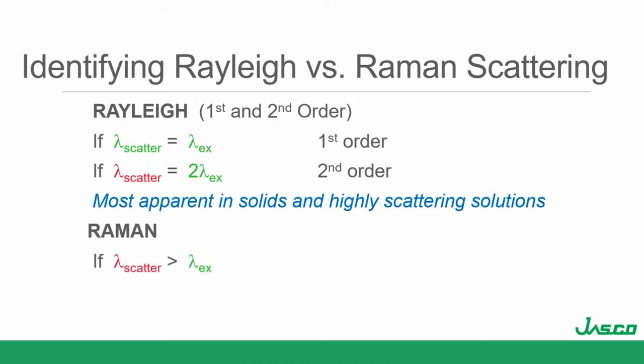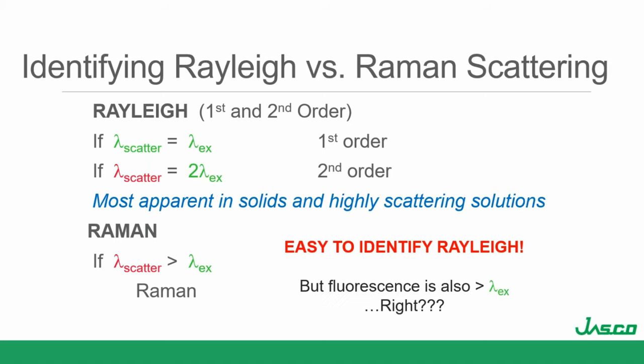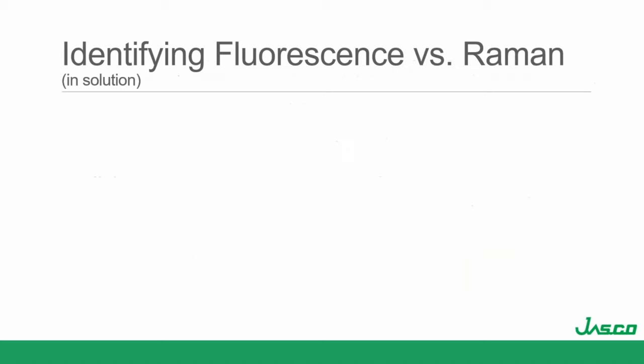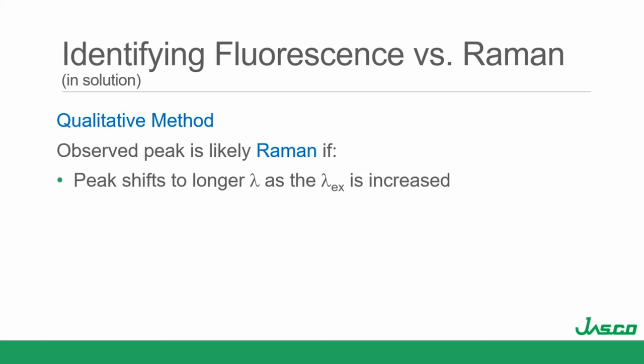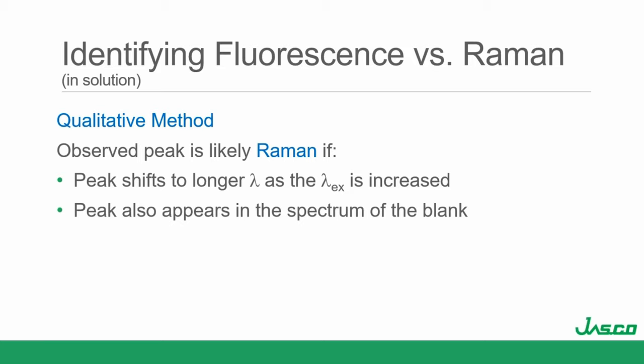Raman is going to show up at longer wavelengths than the excitation band. A more important question is: how do you tell if it's fluorescence or Raman? A quick qualitative check: you can tell the observed peak is Raman if the peak shifts to longer wavelengths when the excitation wavelength is increased. The peak also appears in the spectrum of the blank — if it's just the solvent, you shouldn't see a fluorescence band. So the easiest thing to do is run emission scans at different excitation wavelengths for both sample and blank.